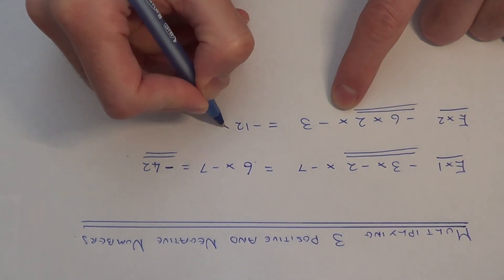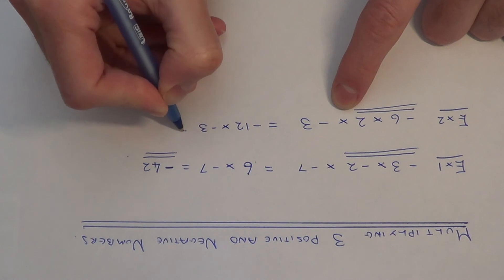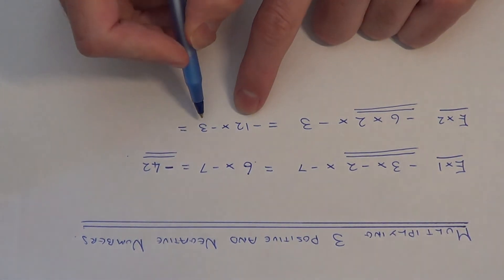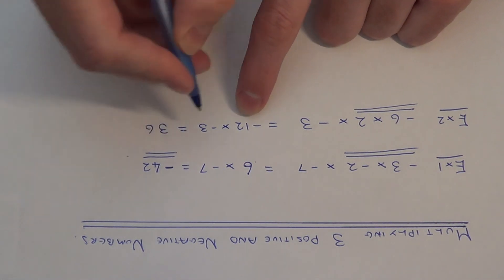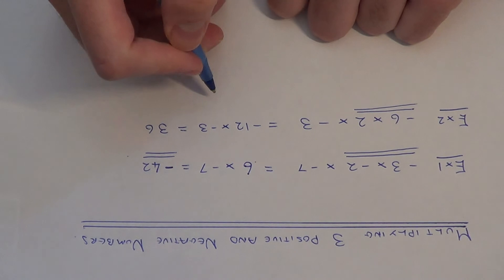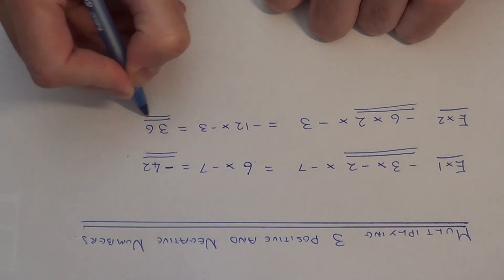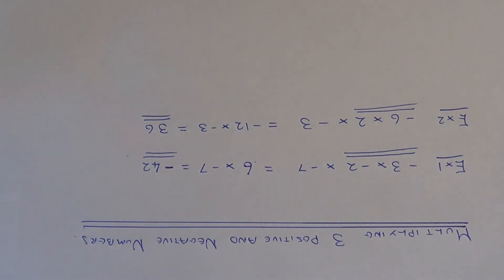We then need to multiply this by negative three. So minus twelve times minus three. This will give plus thirty-six because we have two negative numbers being multiplied together and two negatives make a positive. Thanks for watching.